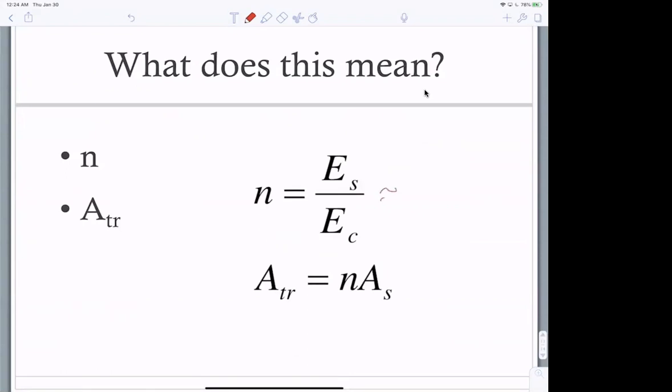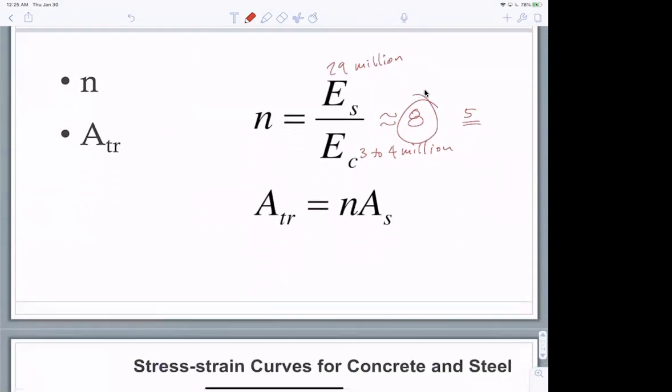N again is E of steel divided by E of concrete. It's about eight. This is like 29 million. And this is like three to four million. E of steel is always 29 million. The E of concrete changes. Higher strength concrete has higher E. One of the projects I was working on here, the concrete was so strong, this was actually about five, but typically N is around eight. So what it's saying is that the transformed equivalent concrete, the transformed area of steel, is just eight times the area of steel, or the N changes.